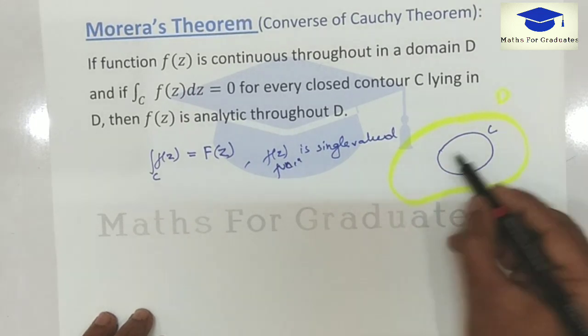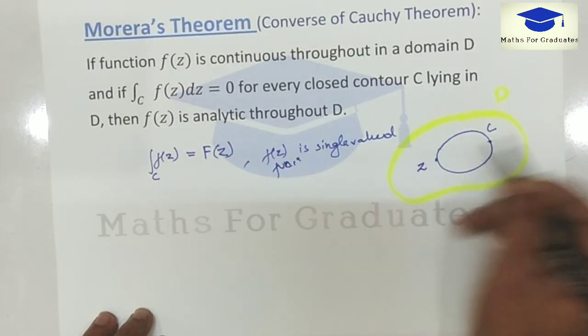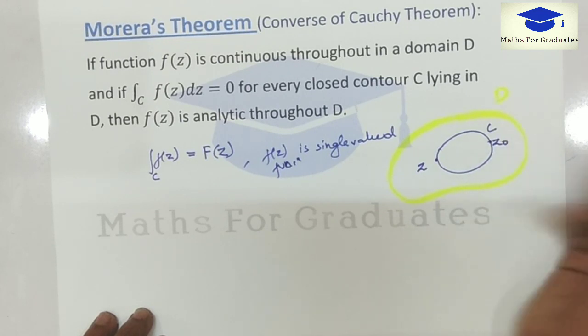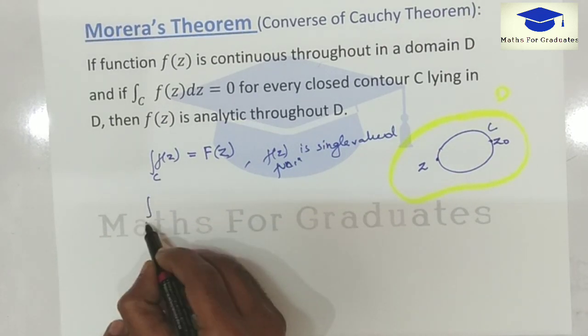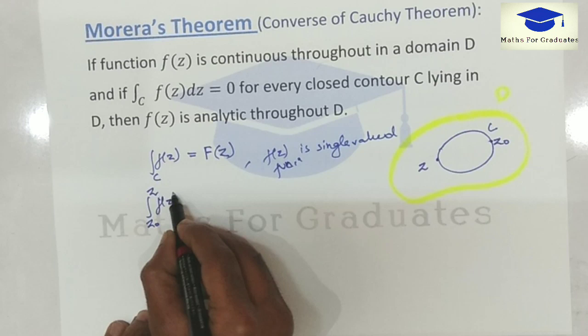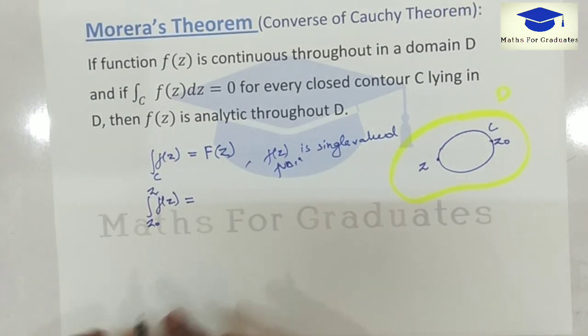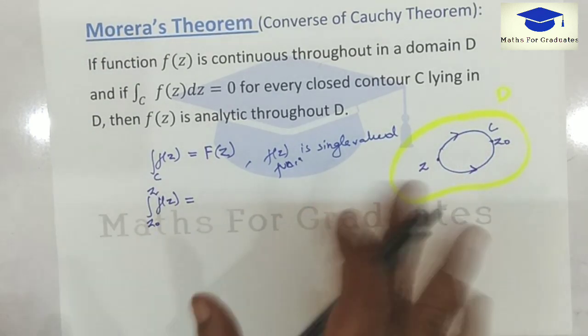Now taking any point from z to z0, then the integration from z0, from that fixed point to any point, this integration does not change on choosing the path. Either we integrate through this manner or this manner, this remains same.